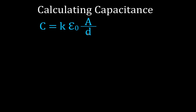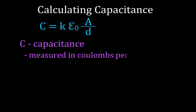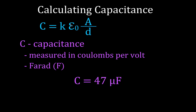What are all of those symbols? The C stands for the capacitance — that is simply the capacitance of a capacitor. Capacitance is measured in coulombs per volt, which we call the Farad, abbreviated as capital F. You might see it written like this: this tells us that the capacitance of a capacitor is 47 microfarads.